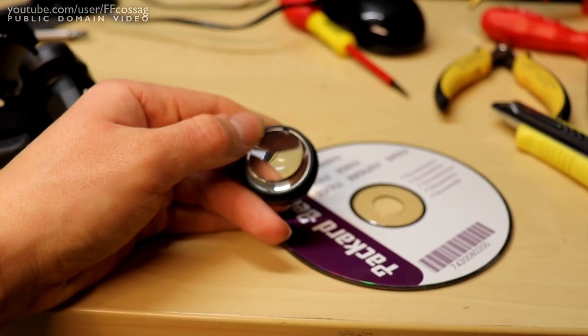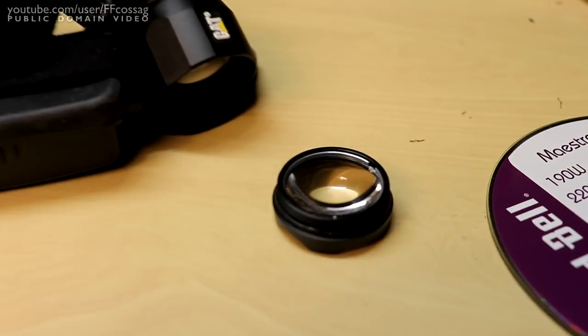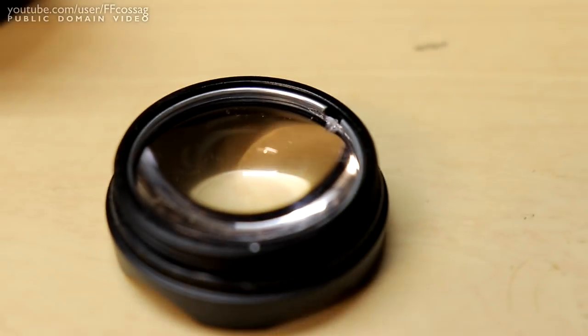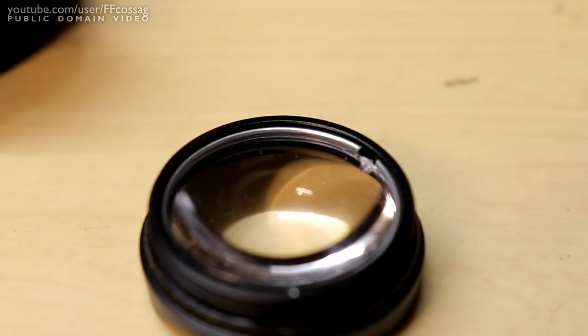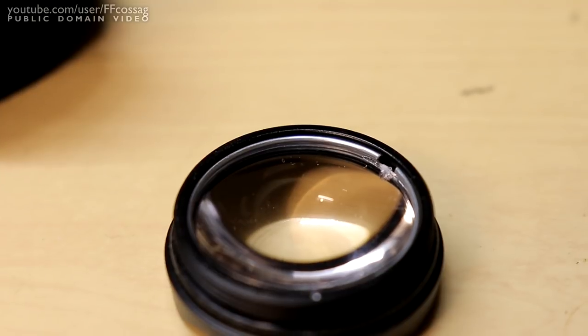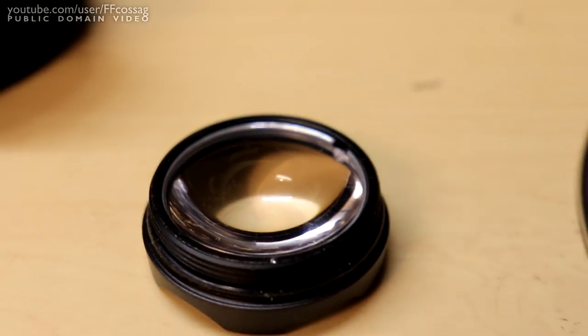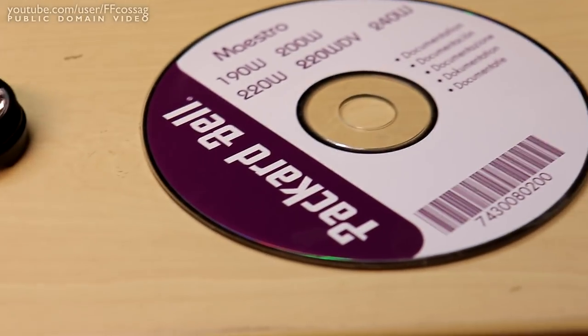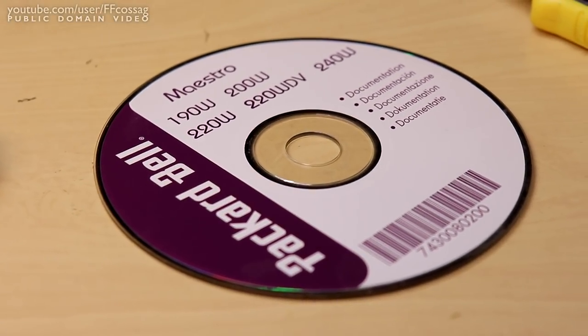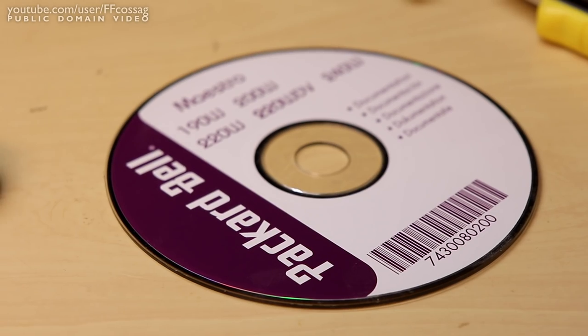So the original lens is just held in with a ring clip there, so it should be rather easy to get out. We just pry it out and install a new one and use the original to size the hole we want to cut on the CD. So let's just give that a go and see how it pans out.